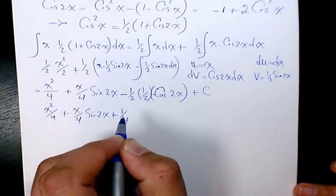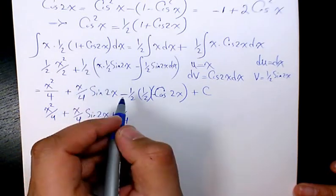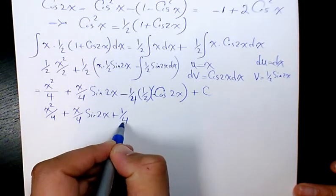1 over 4 times this 1 over 2 here. So we have 1 over 4 here, so it's going to be 1 over 8.